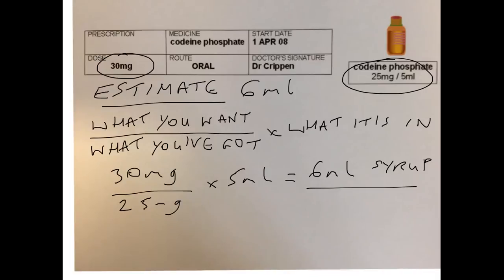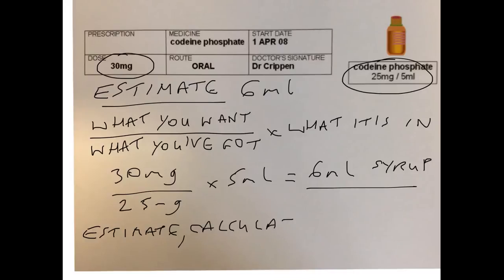So, if we look at our estimate, that ties up quite nicely — it is exactly the same. It is good to use this process: do the estimate first, then calculate using the formula — what you want over what you have got times what it is in — and then check your answer to see if it makes sense. So, 6ml of syrup does make sense. That is our final answer.